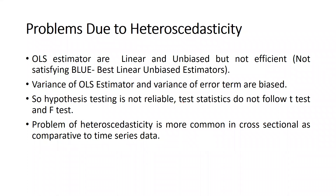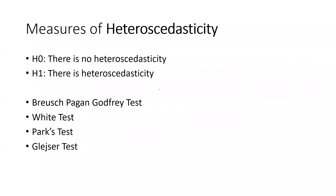Why should heteroscedasticity not be in our model? Because OLS estimators are linear and unbiased but not efficient — they do not satisfy the BLUE (Best Linear Unbiased Estimator) condition. The variance of OLS estimators and the variance of the error term are biased, so hypothesis testing is not reliable and test statistics do not follow the t-test and F-test. Heteroscedasticity is more common in cross-sectional data than time series data.